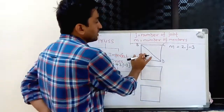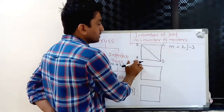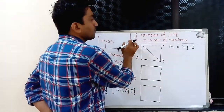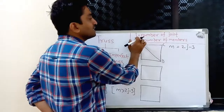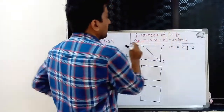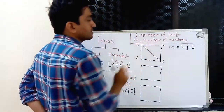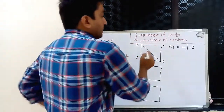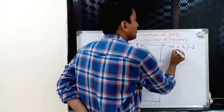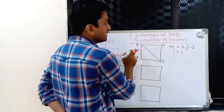In this diagram we can observe the total number of joints in the truss is 4, namely joint A, B, C, D. Here J is the number of joints and M is the number of members present in the given truss. In this first example, the number of joints is equal to 4, whereas the number of members is equal to 5.